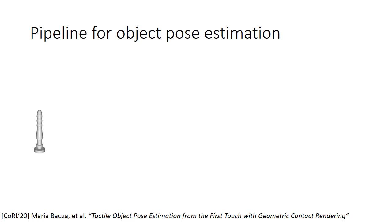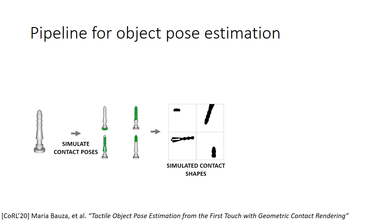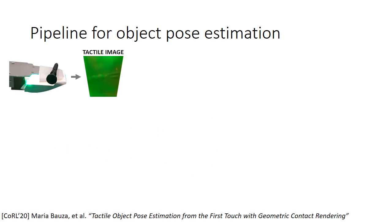Given the object model, we simulate a dense set of contact poses. These are poses where the object and the sensor would be in contact, without penetration. From those poses, we simulate contact shapes, which we represent as depth images that measure how much penetration the object is exerting on the sensor.